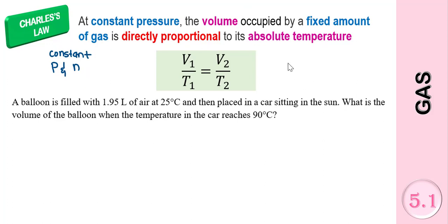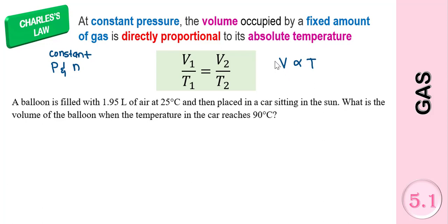So the volume is directly proportional to the absolute temperature. We use the absolute temperature here because we are going to measure the temperature in Kelvin. In this chapter, the units for temperature is always in Kelvin. Since the volume is directly proportional to the absolute temperature, as the volume increases, the temperature also increases, and vice versa.